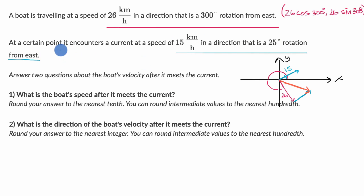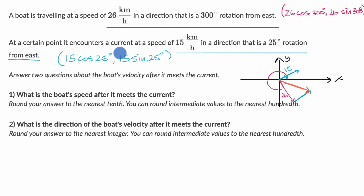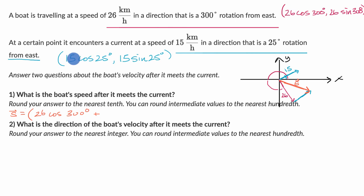Similarly, this blue vector's x component is going to be its magnitude 15 times the cosine of 25 degrees, and its y component is going to be 15 times the sine of 25 degrees. Now when we have it expressed this way, if we want the resulting vector — let's call it vector S for the resulting speed — its components are going to be the sum of each of these. So vector S equals: x component: 26·cos(300°) + 15·cos(25°), and y component: 26·sin(300°) + 15·sin(25°).